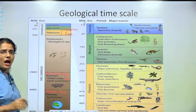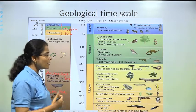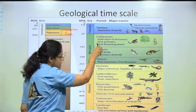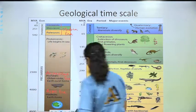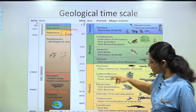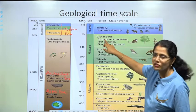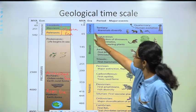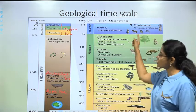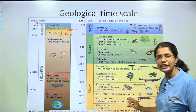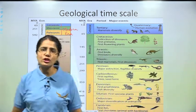These modern eras are further divided into periods. For example, the Paleozoic era is divided into various periods. The Mesozoic era is divided into Triassic, Jurassic, and Cretaceous. The Cenozoic era has the Tertiary period. In each period it shows what kind of organisms came into existence.